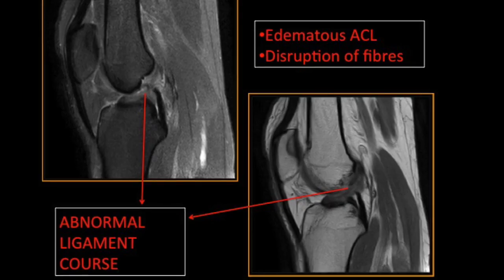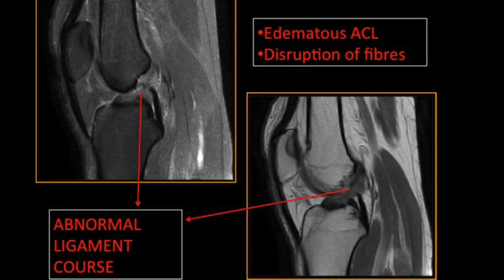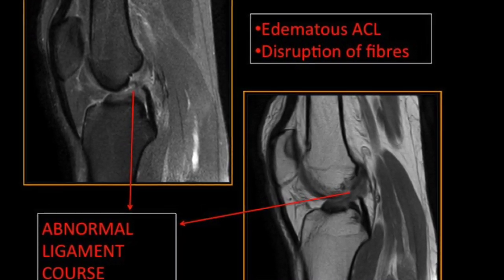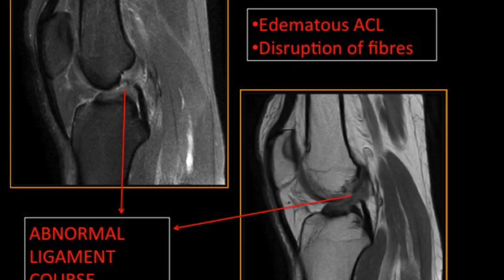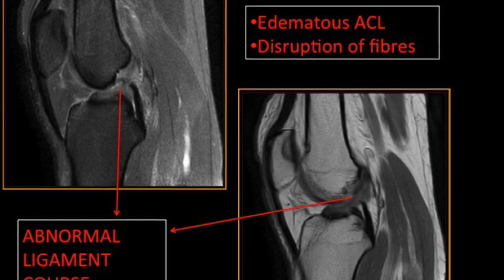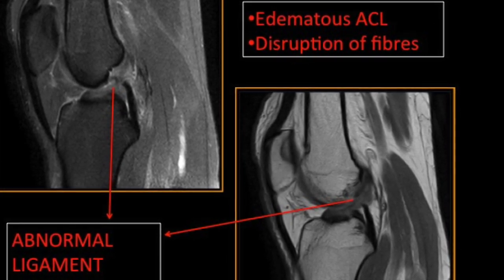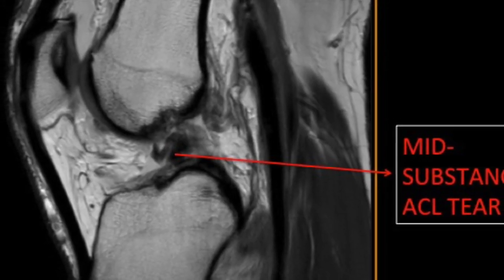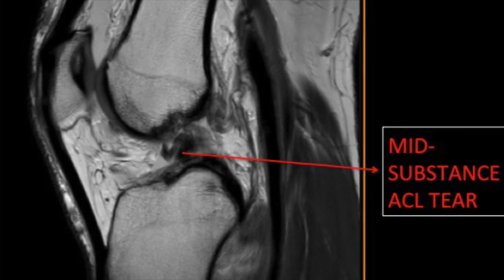Coming to MRI signs of ACL tear, the primary signs are basically three: abnormal signal, abnormal course, and ligament discontinuity. Here we see abnormal signal of the ACL, abnormal ligamentous course, and disruption of fibers. A mid-substance tear with complete disruption of fibers is seen very nicely in the PD non-fat-sat images.